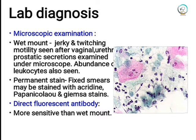For laboratory diagnosis, microscopic wet mount examination is performed on vaginal or urethral secretions, where jerky and twitching motility is observed along with evidence of leukocytes. Permanent stained smears may be prepared using Papanicolaou and Giemsa stains. Direct fluorescent antibody testing is more sensitive than wet mount microscopic examination.